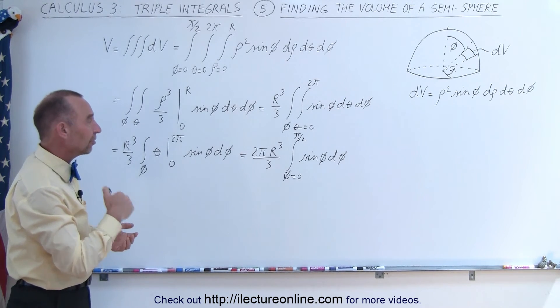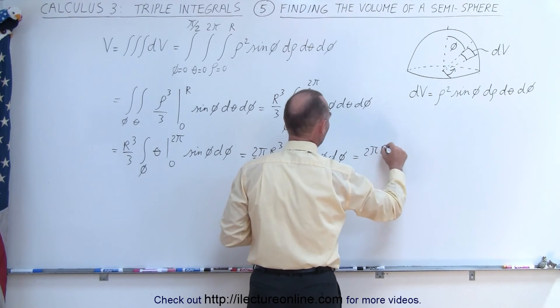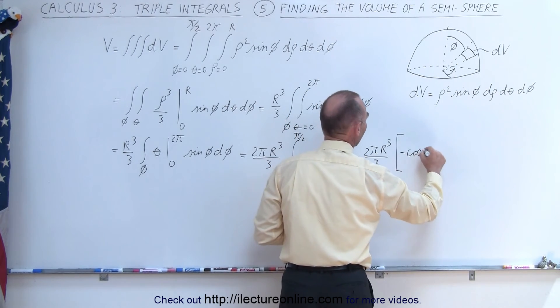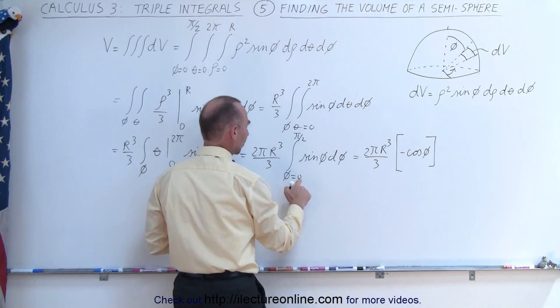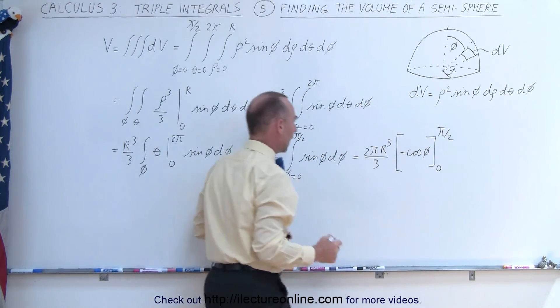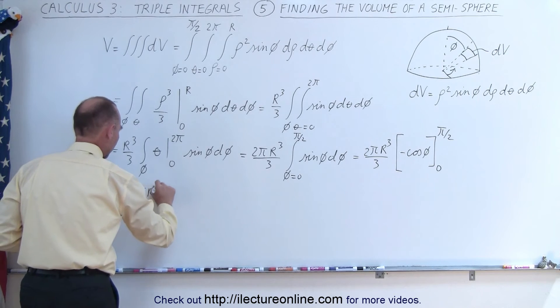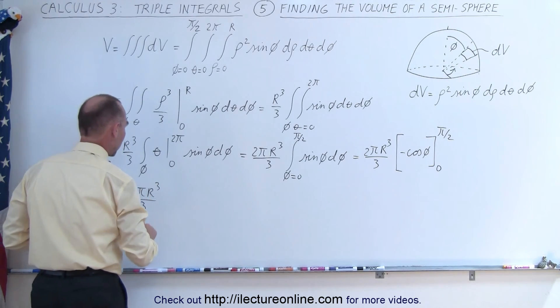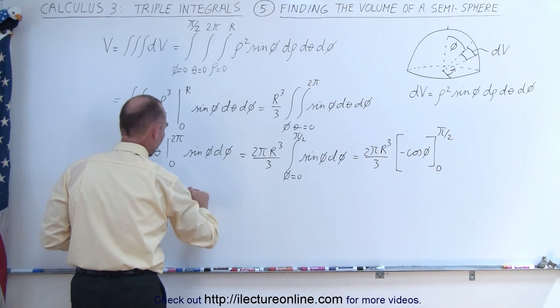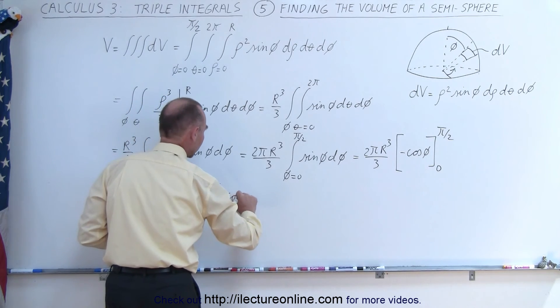And the integral of the sine is the negative cosine. So this becomes equal to 2 pi r cubed over 3 times the negative cosine of phi, and the limits of integration are going to go from 0 to pi over 2. Now, what does that become? Well, we have 2 pi r cubed over 3, so 2 thirds pi r cubed, times, when we plug in the upper limit, we get minus the cosine of pi over 2 minus a minus cosine of 0.